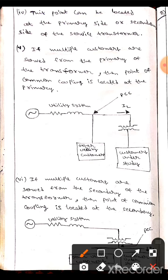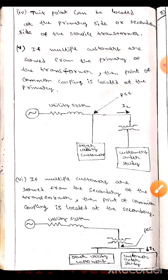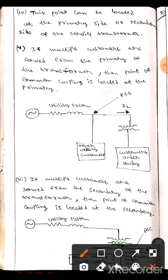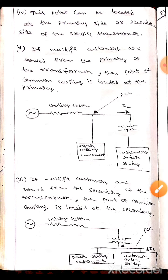If you look at the second diagram, this is the secondary side of the transformer where multiple customers are served. In this case, the point of coupling, PCC, is located at the secondary side.